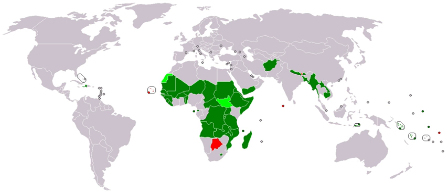The term 'global south' began to be used more widely since about 2004. It can also include poorer, southern regions of wealthy, northern countries. The global south refers to these countries' interconnected histories of colonialism, neo-imperialism, and differential economic and social change through which large inequalities in living standards, life expectancy, and access to resources are maintained.